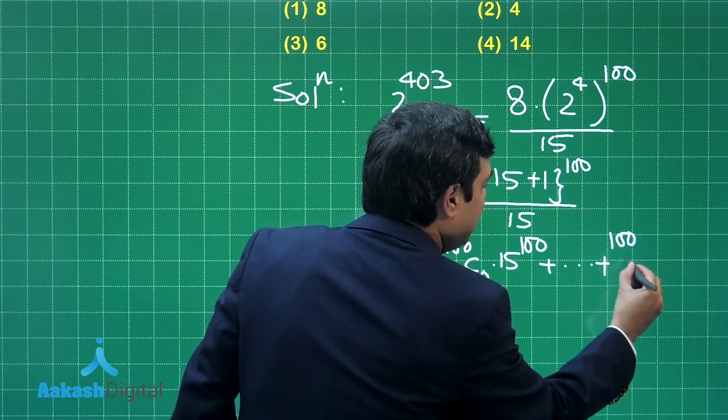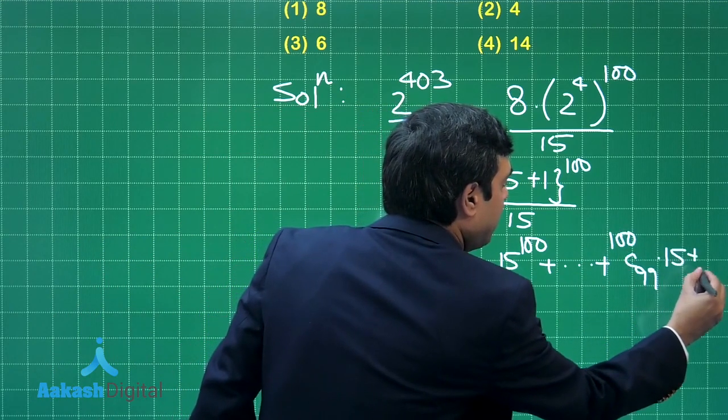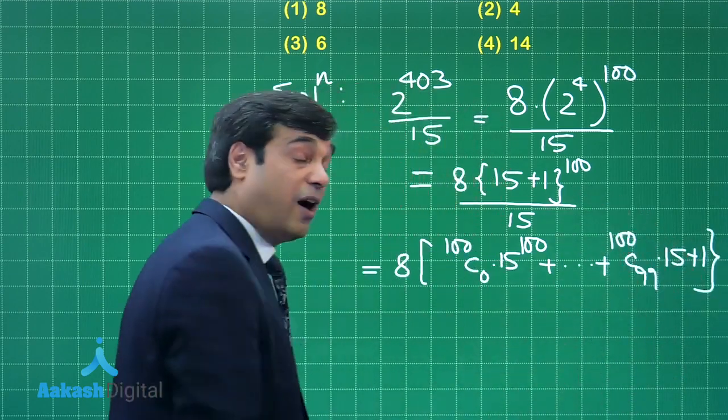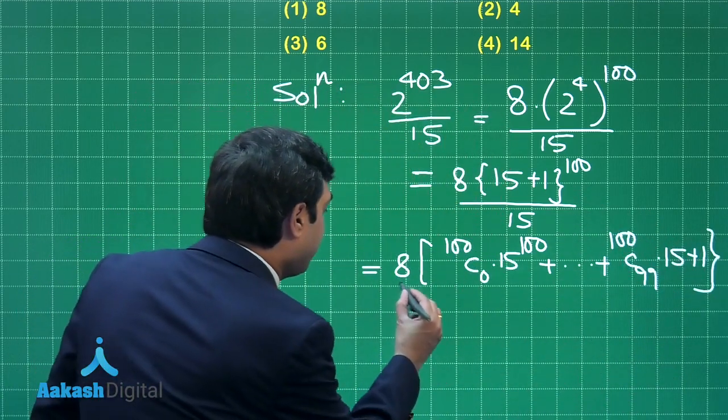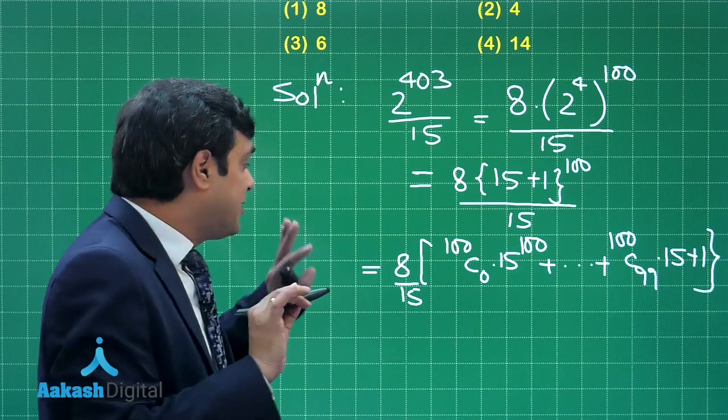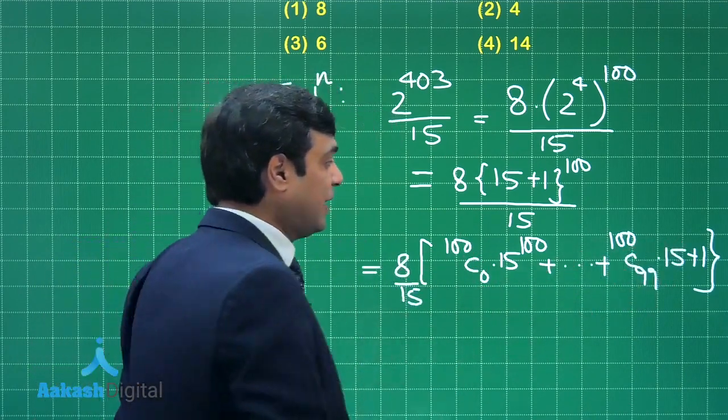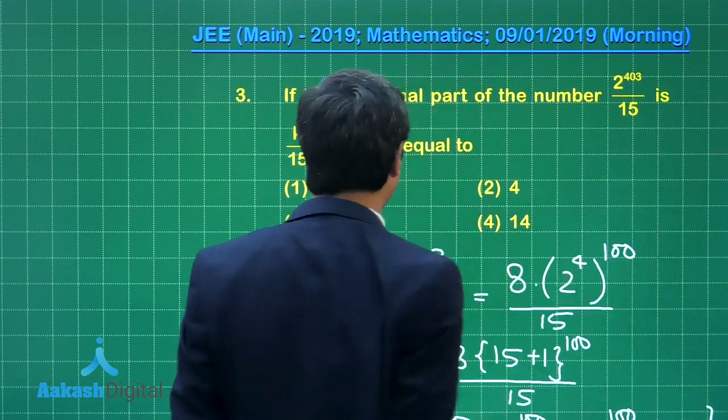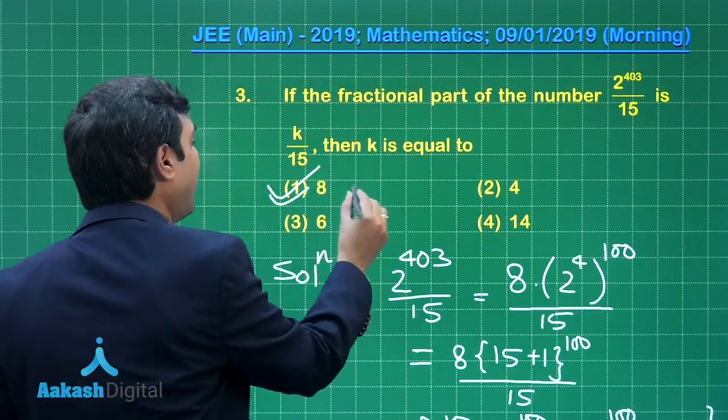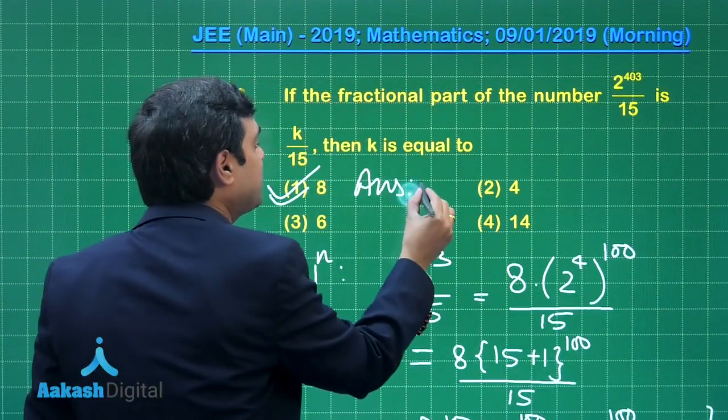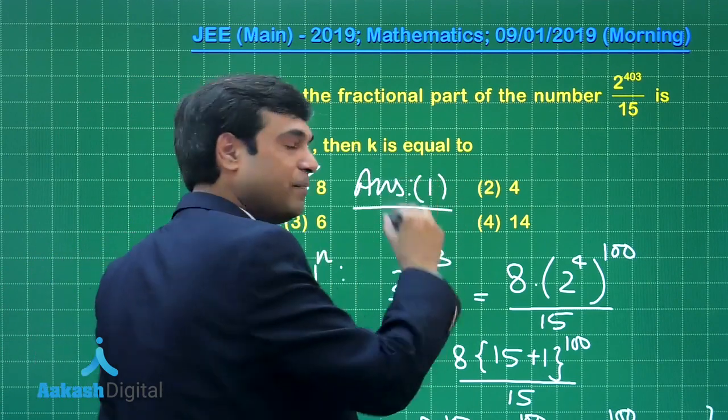When you are checking it out, what is the remainder? It is simply 8/15. Let us look at the given options. It is given as option number 1. The value of k comes out to be 8. I am sure this part is clear.